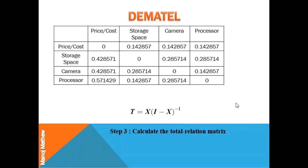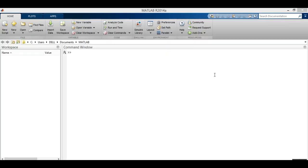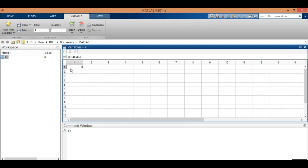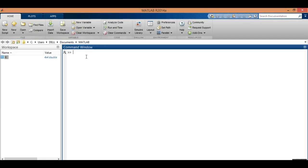Next, we calculate the total relation matrix using this formula where I represents the identity matrix. I will be using MATLAB for finding the total relation matrix that is t. This is the MATLAB interface. In the workspace, I will be creating a variable and name it as x. Open the variable and paste all the values from the direct relation matrix. Close the variable and solve for getting the total relation matrix.